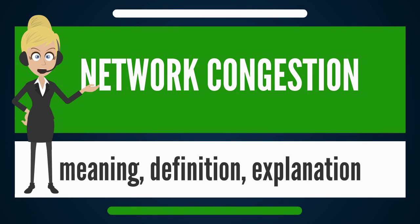Congestion collapse was identified as a possible problem by 1984, for example in RFC 896. It was first observed on the early internet in October 1986, when the NSFNET Phase 1 backbone dropped three orders of magnitude from its capacity of 32 kilobits/s to 40 bits/s, which continued until end nodes started implementing Van Jacobsen's congestion control between 1987 and 1988.